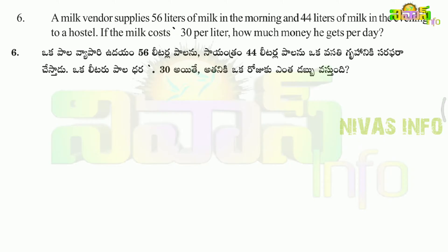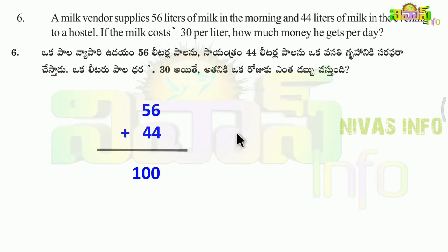This is the same cost for morning and evening. So what do you do? Morning plus evening — any milk you supply: 56 liters plus 44 liters equals 100 liters. This 100 liters at 30 rupees. So, 30 multiplied by 100.